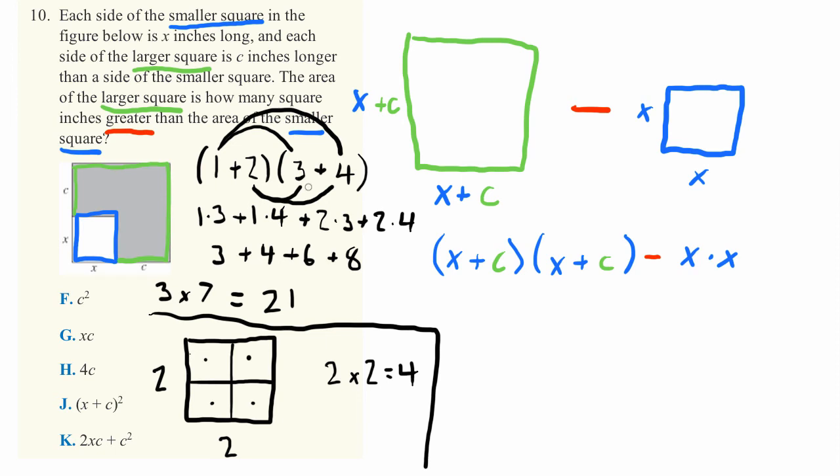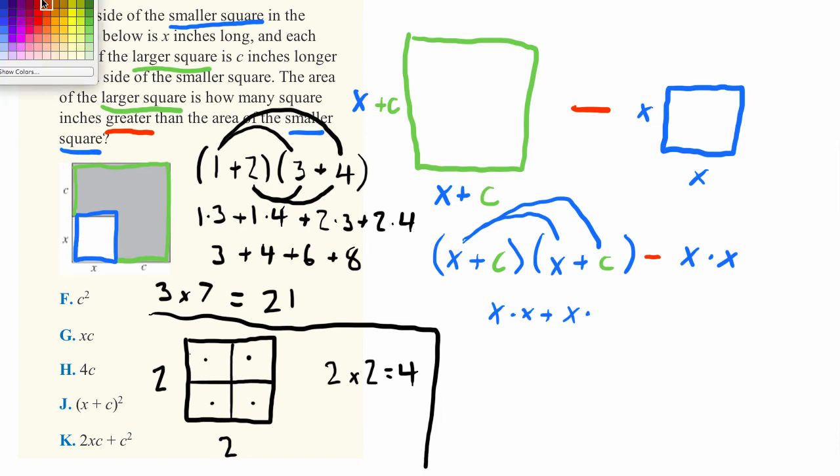What's nice about going the first way we went is we didn't actually have to know how to add up these numbers on their own. That's the same situation we're in over here in our problem. Here we can do the exact same thing, so let's multiply together X times X plus X times C.